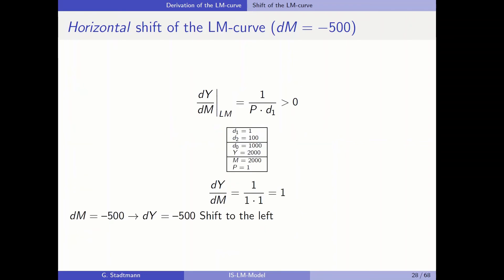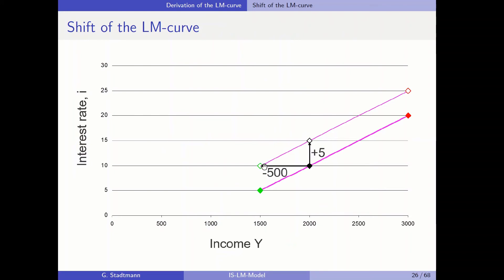Plugging in the numerical values gives dY/dM equal to 1. This means when the central bank increases money supply by one unit, the LM curve shifts to the right by one unit; when it decreases by one unit, the LM curve shifts one unit to the left. In our graphical example, the central bank changed money supply by 500 units, so the LM curve shifts 500 units to the left — which is exactly what we see in the graph.